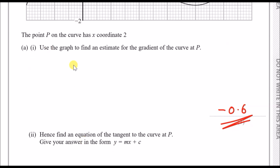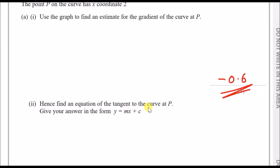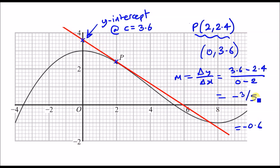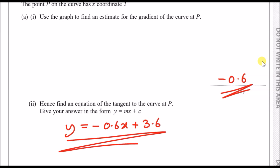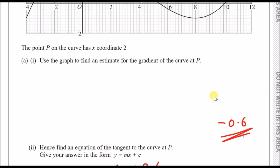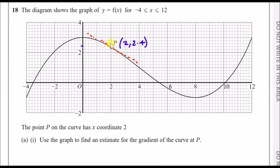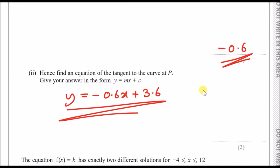The second part asks for the equation of the tangent to the curve at P in the form y equals mx plus c. The tangent is the equation of the straight line we just drew. We know m is minus 0.6 and c is the y-intercept, which is 3.6. So the equation is y equals minus 0.6x plus 3.6. Note this is an estimate, so the mark scheme may accept values like 0.5 or 0.7 — it depends how you draw the line.